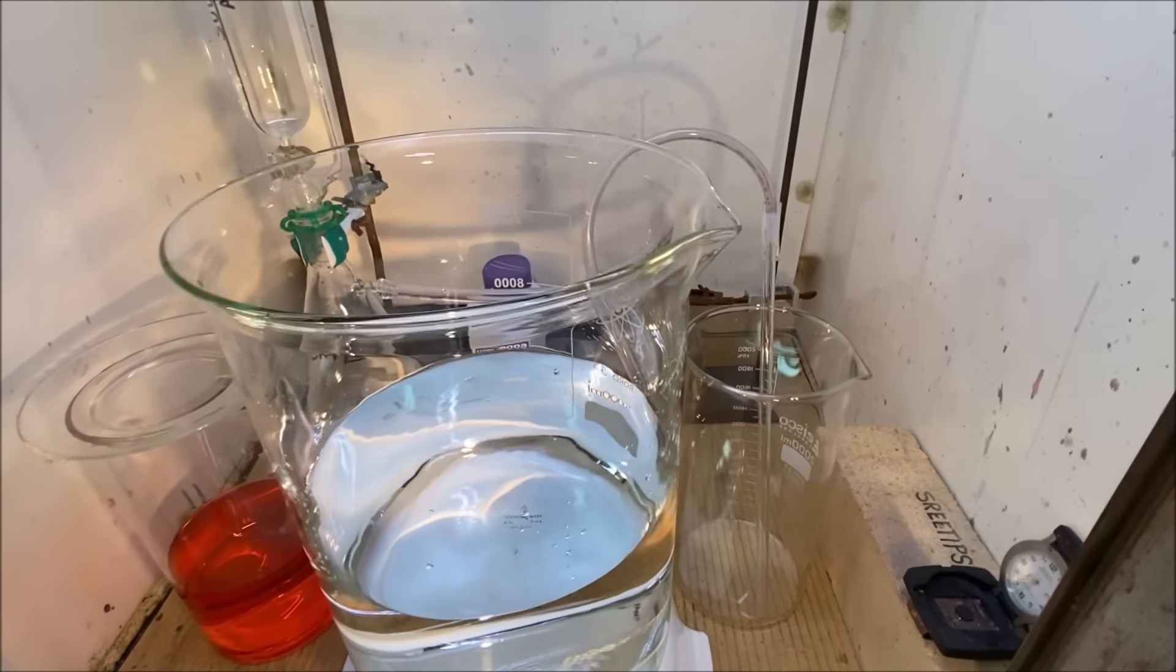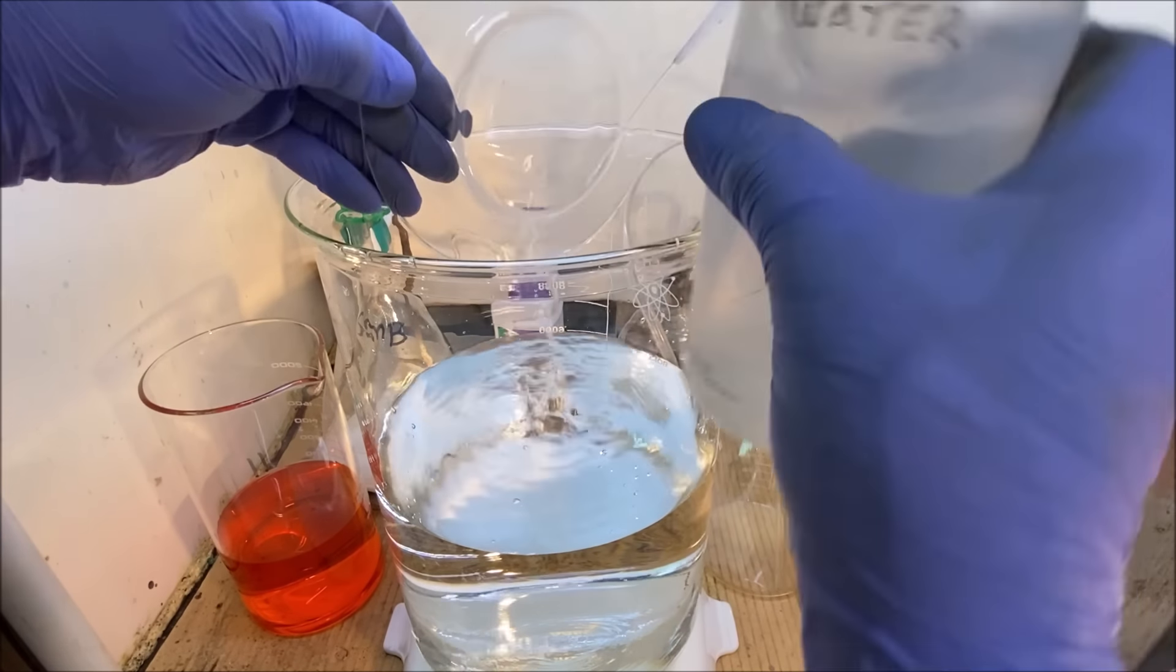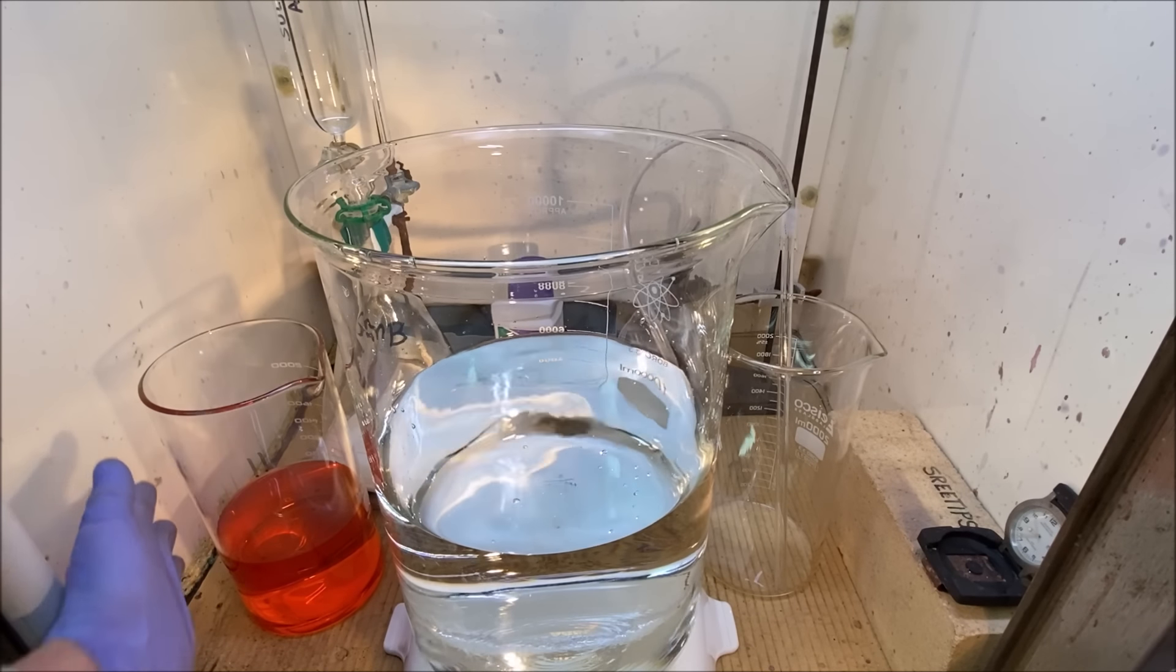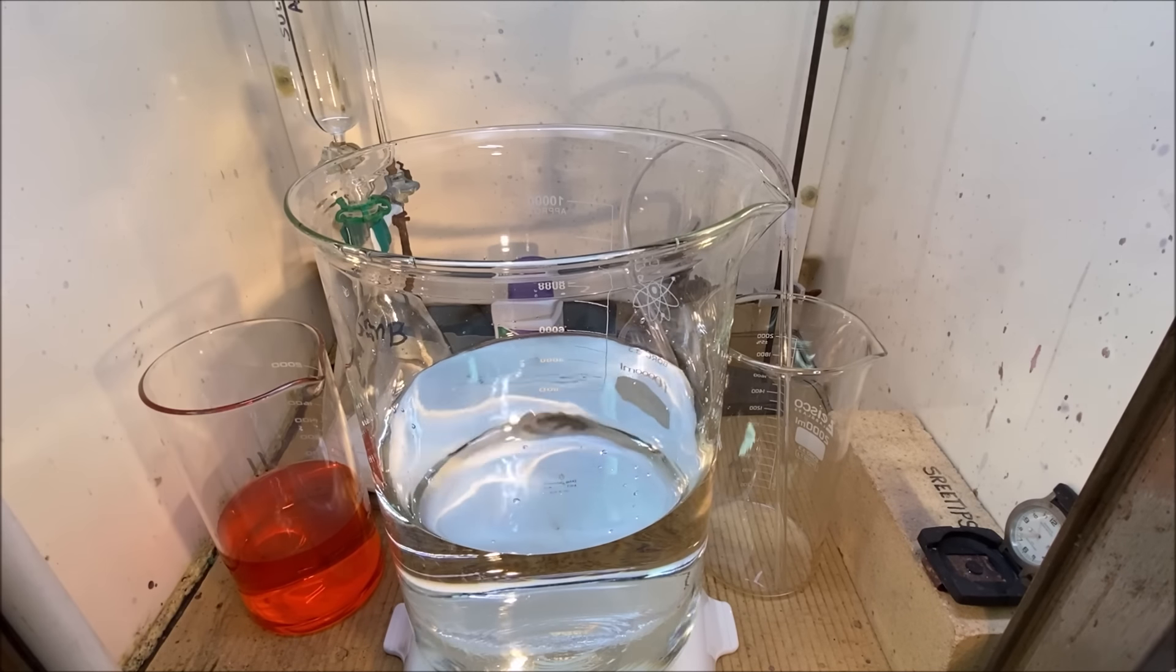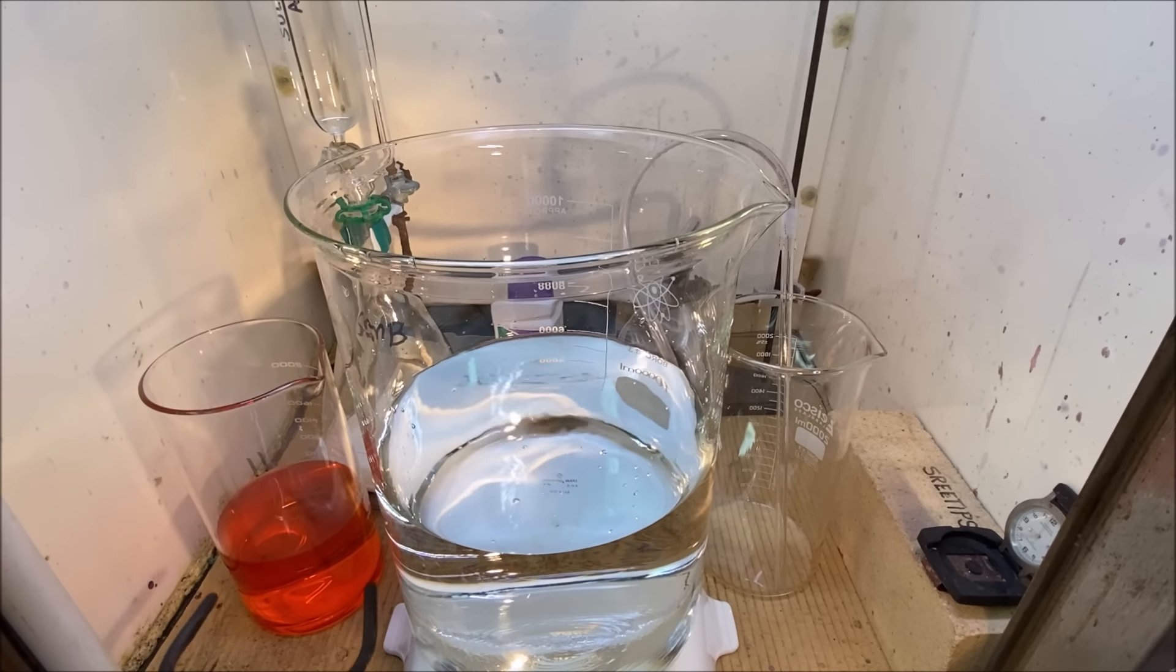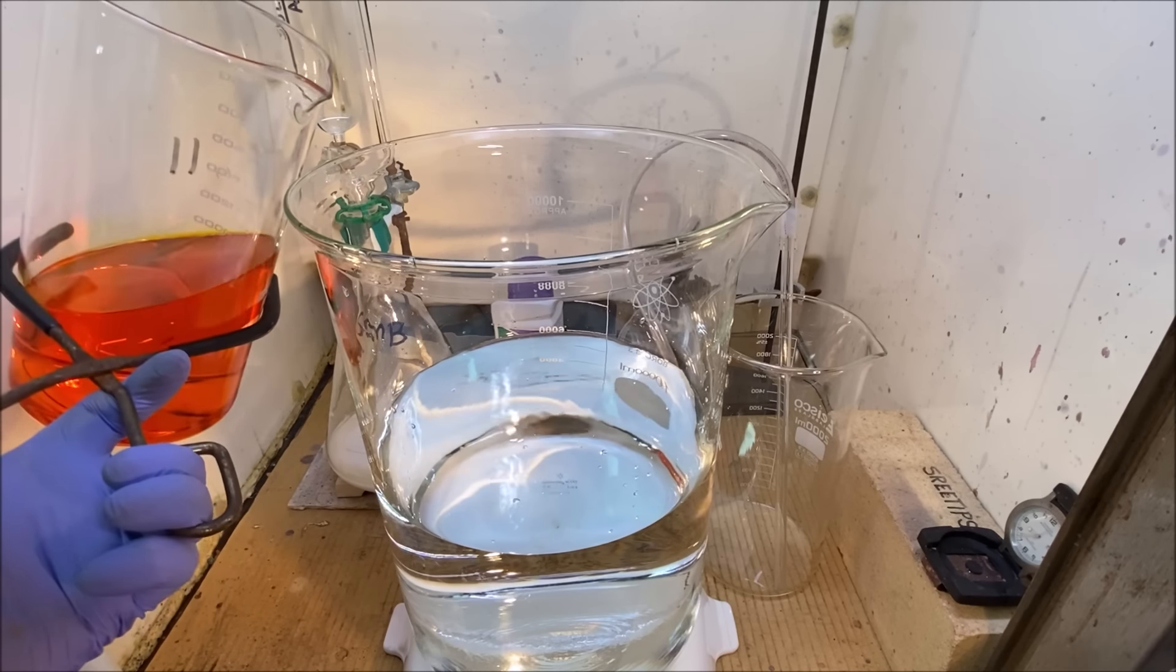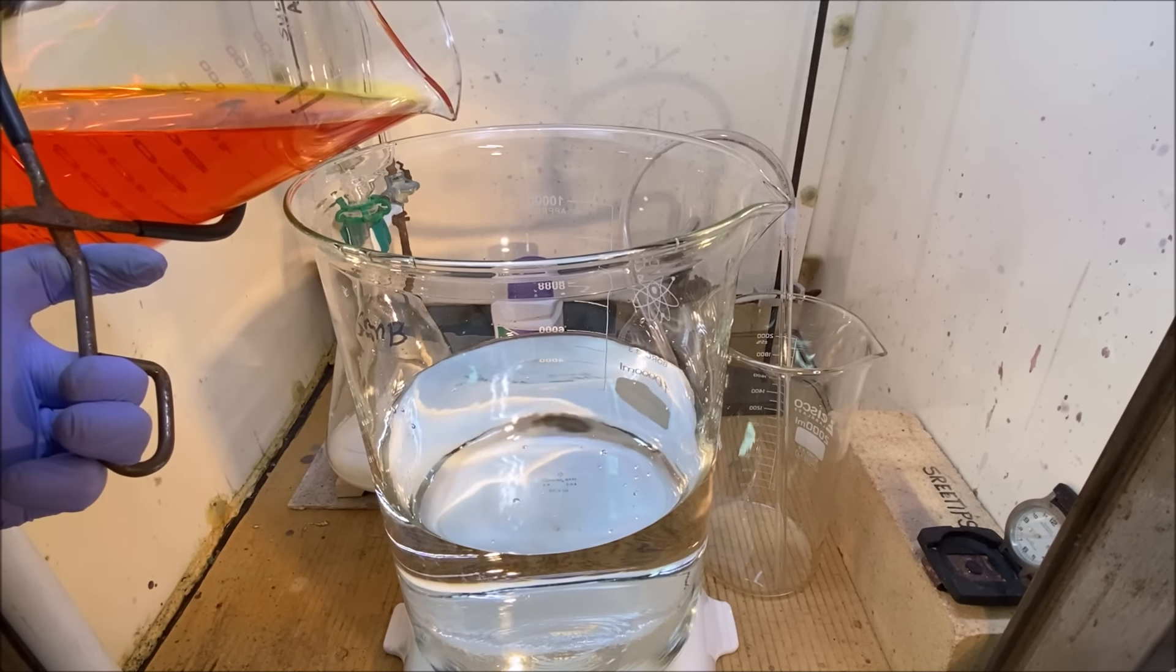All right, we've got a bubbler back there way in the back and that tells us that we've got a good gas flow going. Now we're going to add this gold solution to this water. I didn't even filter it. It's going to add this chloroauric acid solution right on into the 10 liter beaker that's got our distilled water. I'm going to add this right on in now. Here we go, see what happens here.